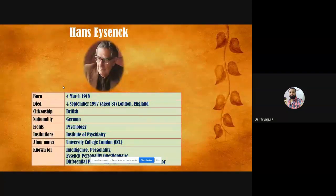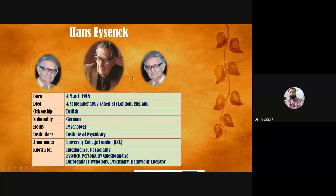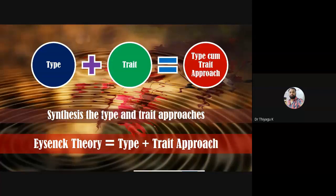Now I am discussing the theory called Hans Eysenck's theory. What he really does is blend the two theories — the type theory as well as the trait approach. This combination of type plus trait is called the type-come-trait approach. Eysenck's theory discusses both approaches together; he is not discussing type separately or trait differently — he discusses the entire things together.